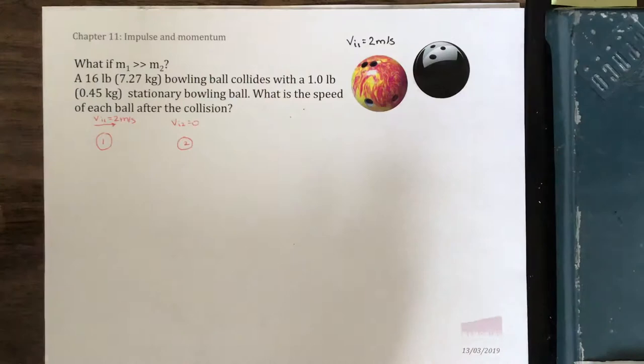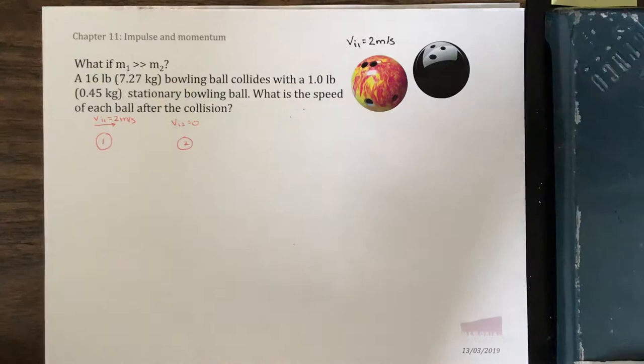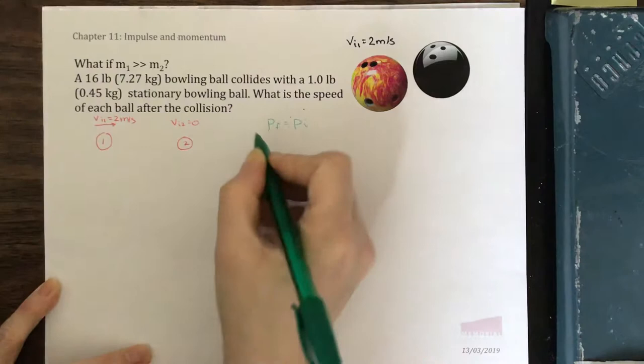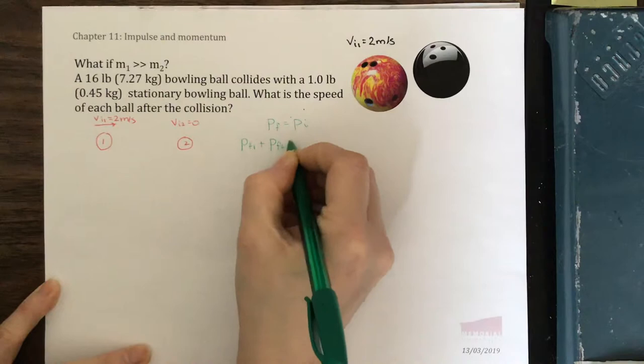This is an elastic collision, so we'll use conservation of momentum and conservation of kinetic energy because both things are conserved in an elastic collision. Let's write the statement for conservation of momentum first. Momentum final equals momentum initial. Momentum final is the final momentum of both things, 1 and 2 together, equals the initial momentum of both things together.